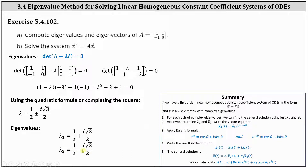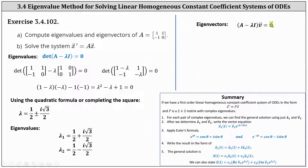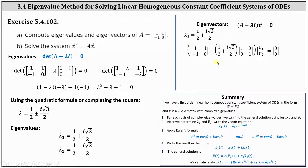The next step is to determine corresponding eigenvectors for each eigenvalue. Beginning with lambda sub one, we set up the equation: the difference of A and lambda I times vector v equals a zero vector, and then determine vector v, which gives us a corresponding eigenvector. Using lambda sub one equals one half plus i square root three divided by two, we set up our equation.